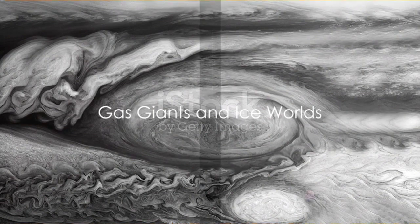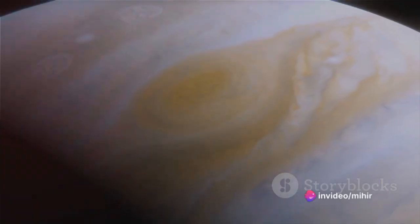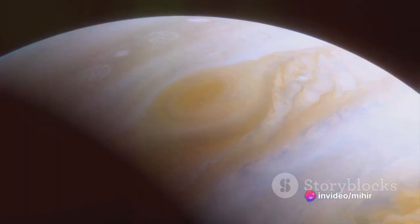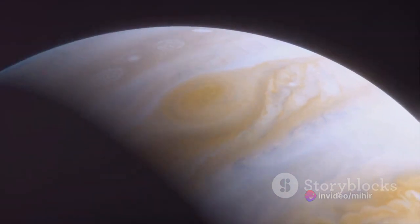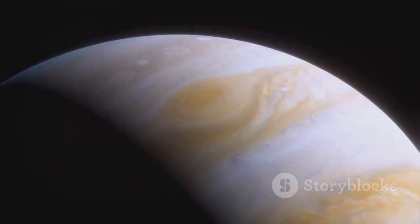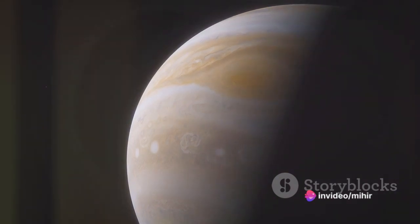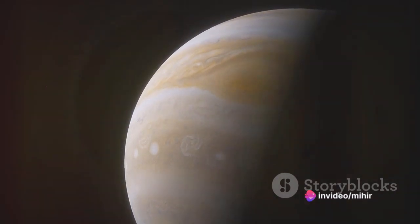Beyond the asteroid belt, the outer planets await: Jupiter, Saturn, Uranus, and Neptune. As we journey further from the sun, the planets we encounter are vastly different from the inner, rocky planets. These are the gas giants and ice worlds. These celestial bodies are colossal in size, dwarfing their terrestrial counterparts with their enormous girth.